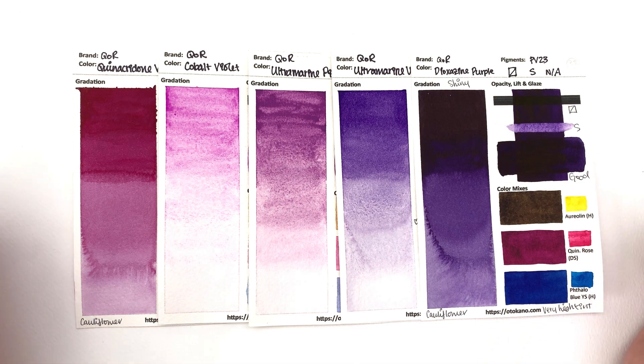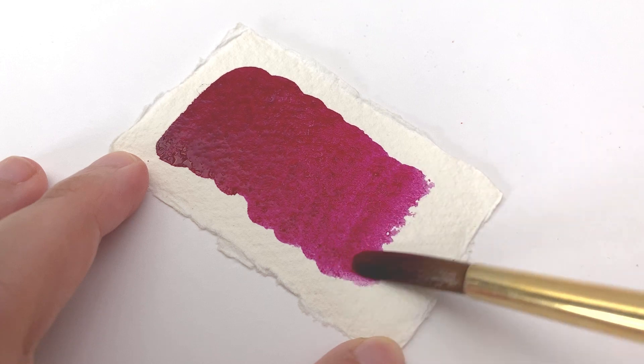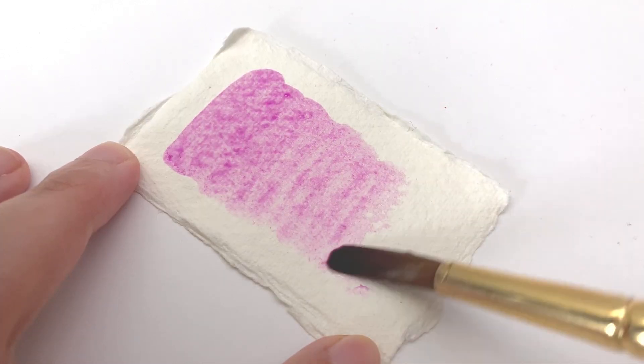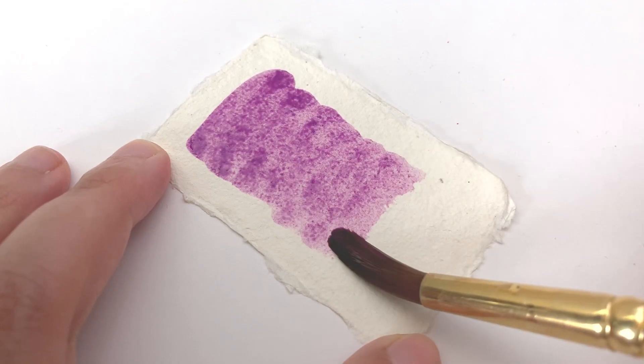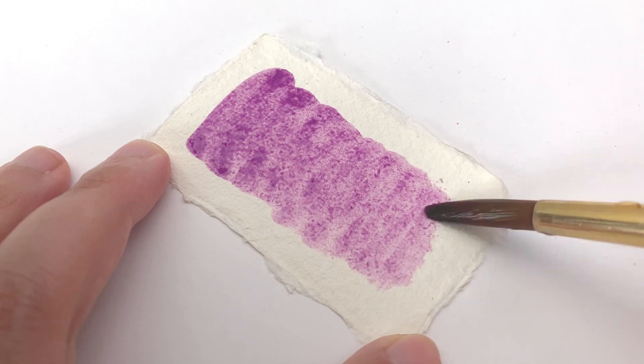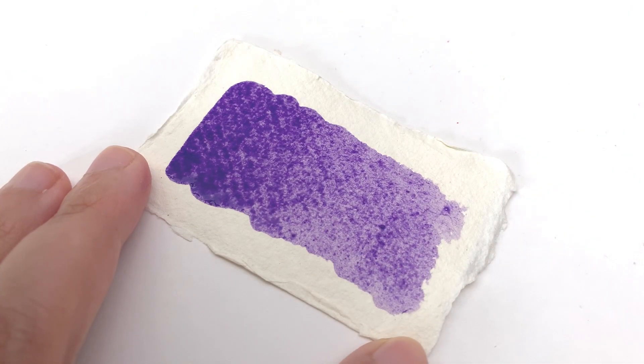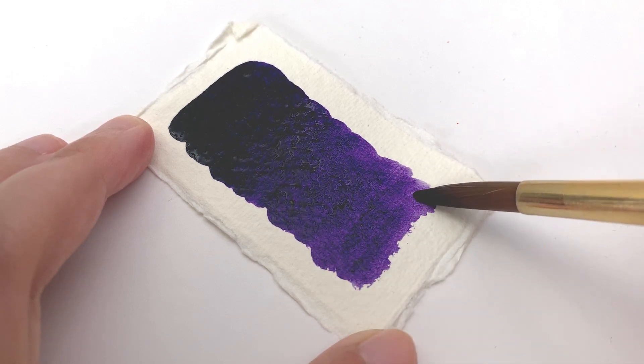In this video we have Quinacridone Violet made with PV19, Cobalt Violet made with PV49, Ultramarine Pink made with PV15, Ultramarine Violet PV15, and Dioxazine Purple made with PV23.